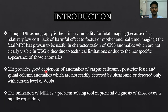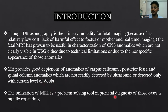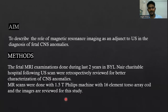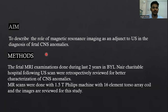MRI provides good depiction of anomalies of the corpus callosum, posterior fossa, and spinal cord, which are not detected by ultrasound or detected only with a certain level of doubt. The utilization of MRI as a problem-solving tool in prenatal diagnosis is rapidly increasing. The aim of my study is to describe the role of MRI as an adjunct to ultrasound in the diagnosis of fetal CNS anomalies.